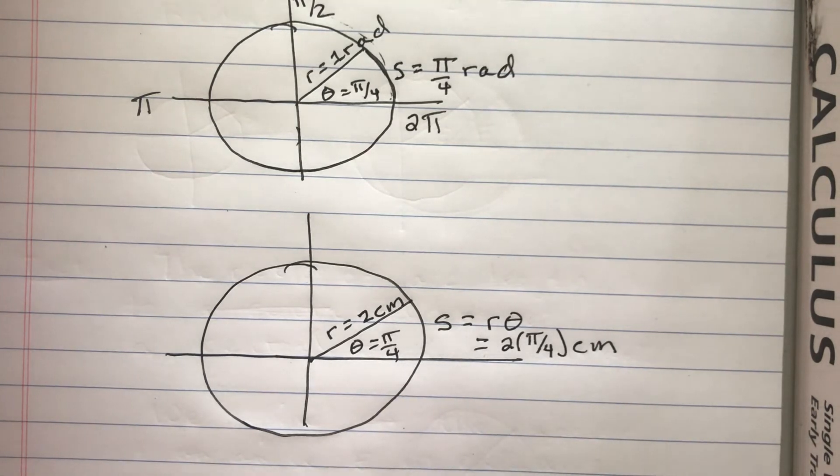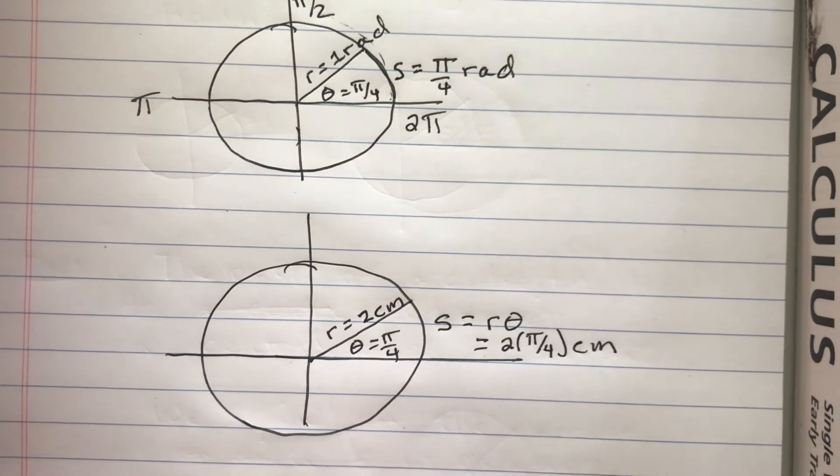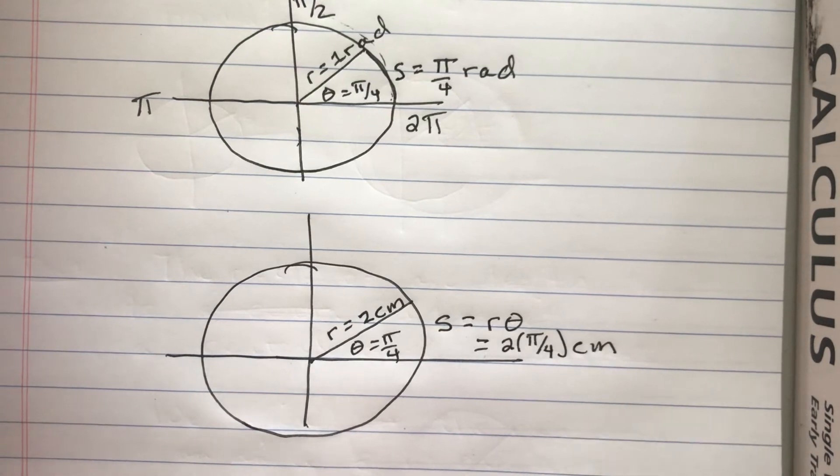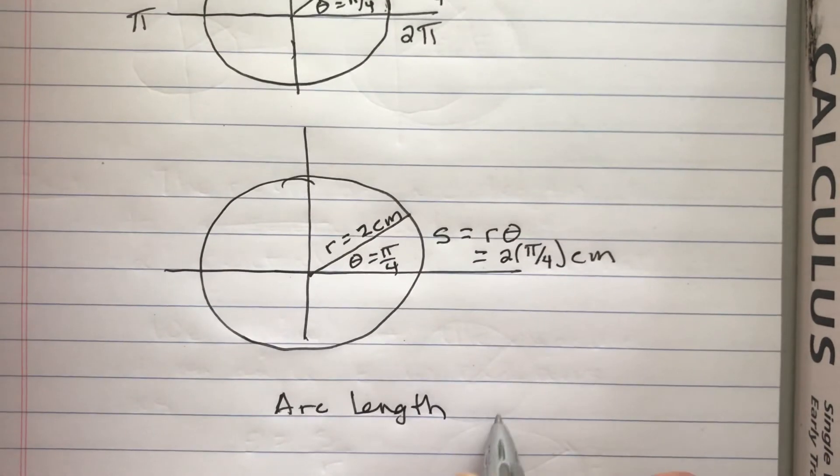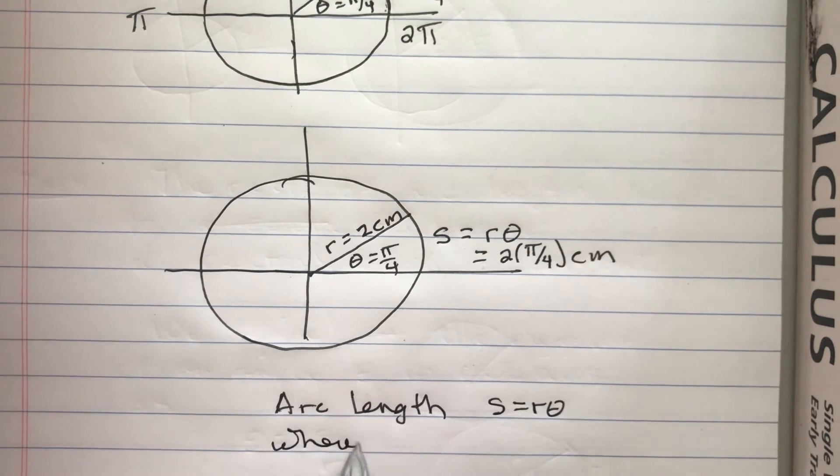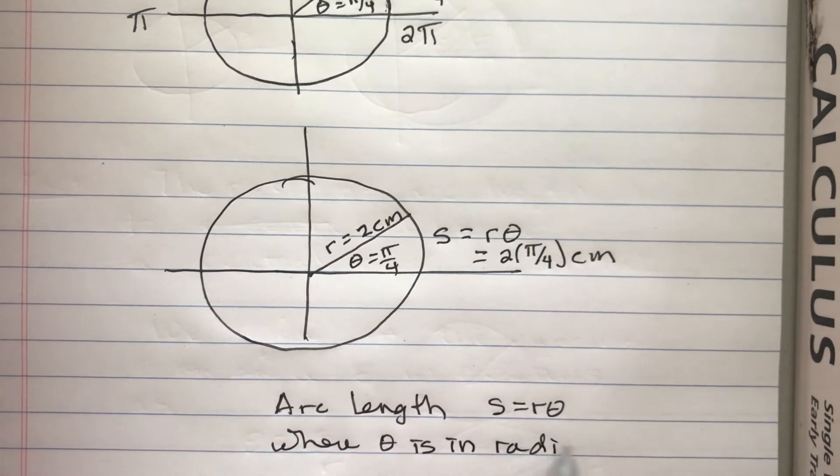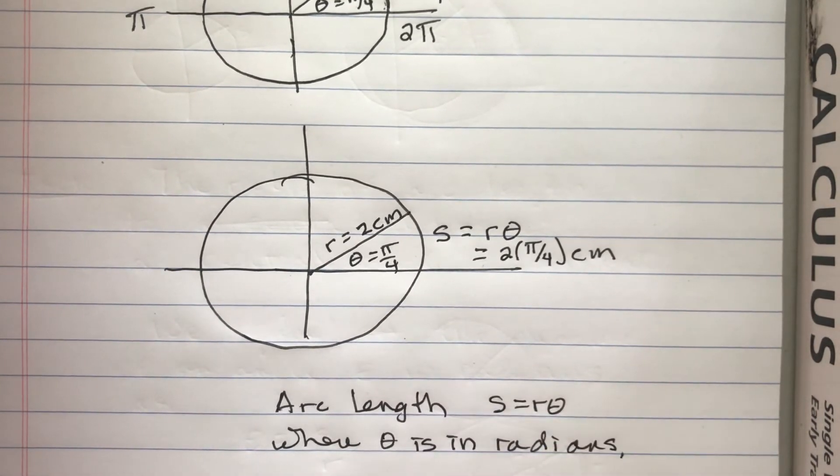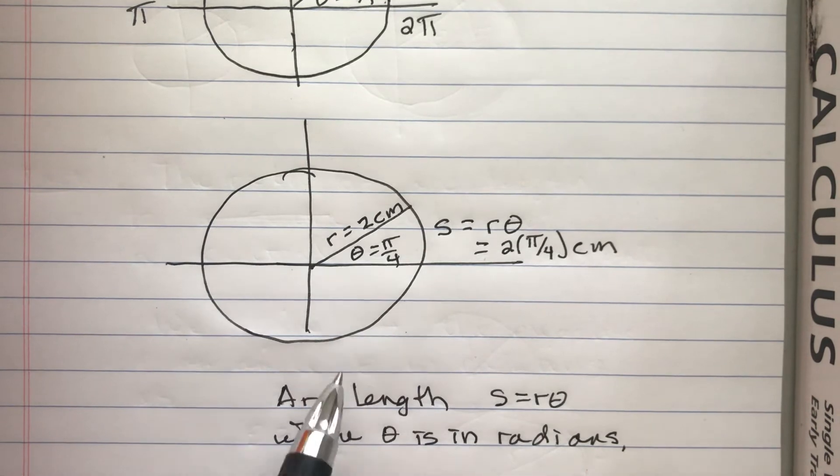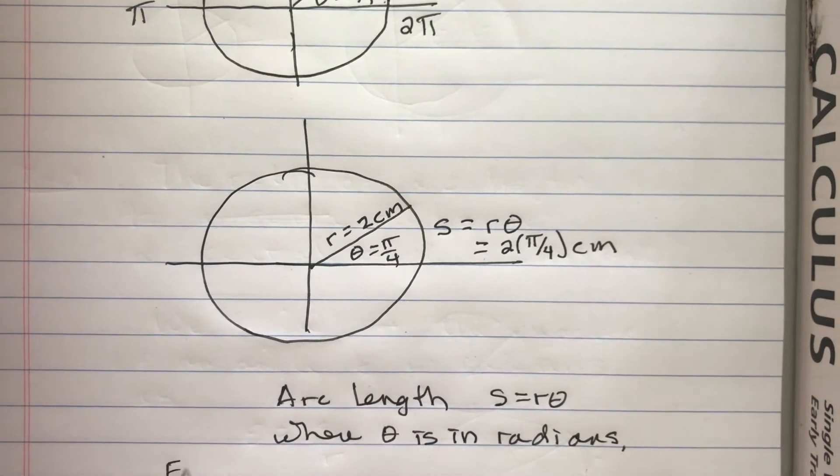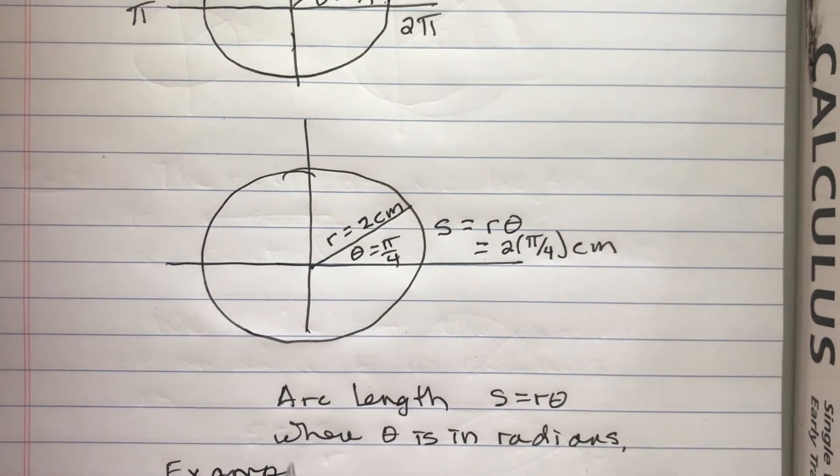So the formula is S equals R theta, where theta is in radians. I think some people think of radians as sort of tricky, and it's trying to explain what exactly it means. But it can be tricky, but let's just do this example.